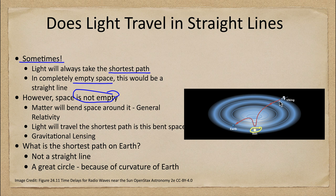So if light wanted to travel in a straight line, it would have to travel straight through this, and that would be traveling out of our space — that would not be able to happen. The light has to travel through the space, through our four-dimensional space-time.